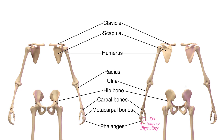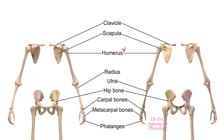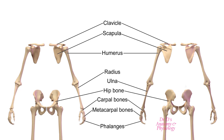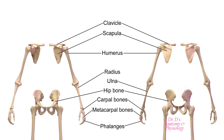The actual bones within the upper limb include the humerus, the two bones of the forearm — the radius and the ulna — the wrist bones or carpal bones, the bones of the palm or metacarpal bones, and the bones of the fingers, the phalanges.